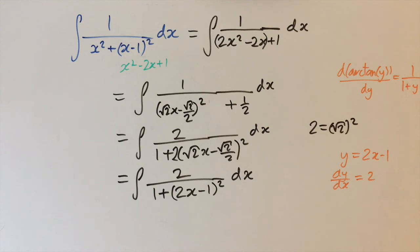just comes out to be the arctan of this, so 2x minus 1. And we need to always add a constant plus C. So this is the solution to this integral.